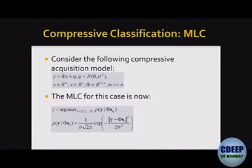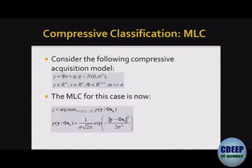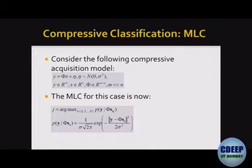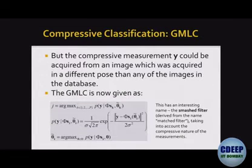In addition to that, there may be rotation and translation changes. Before the compressive measurements of the image were acquired, the image underwent some translation or rotation, which means the camera underwent some translation or rotation — assuming in-plane rotation and in-plane translation here. So now you have to search for not only the class label but also the motion parameters.